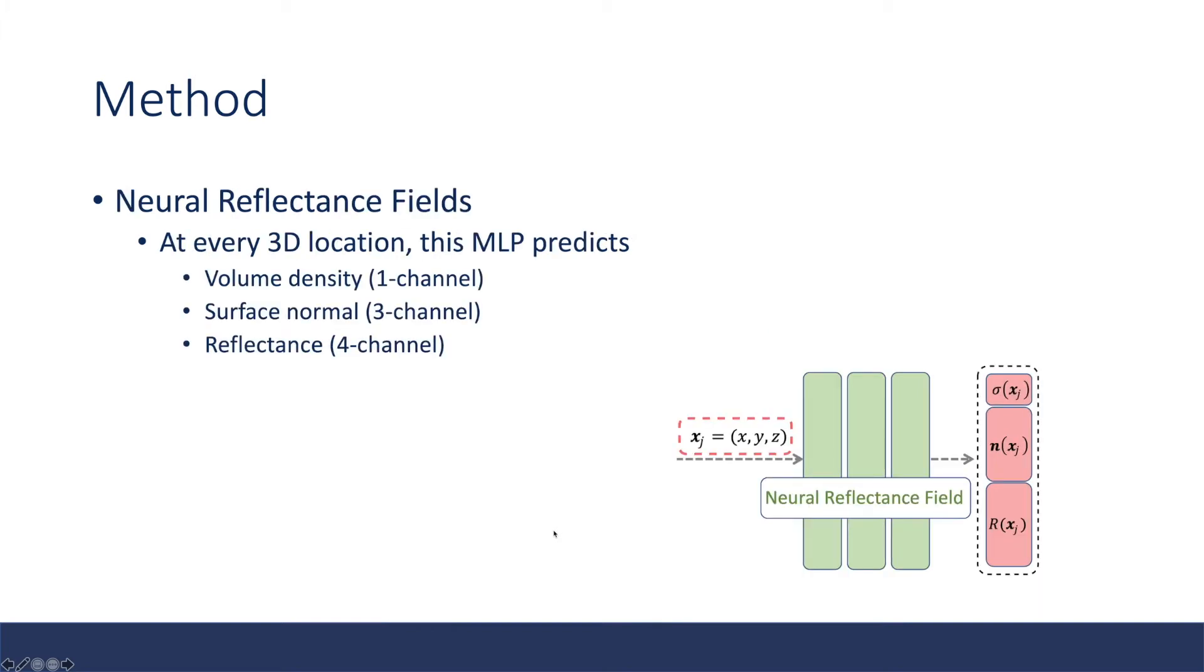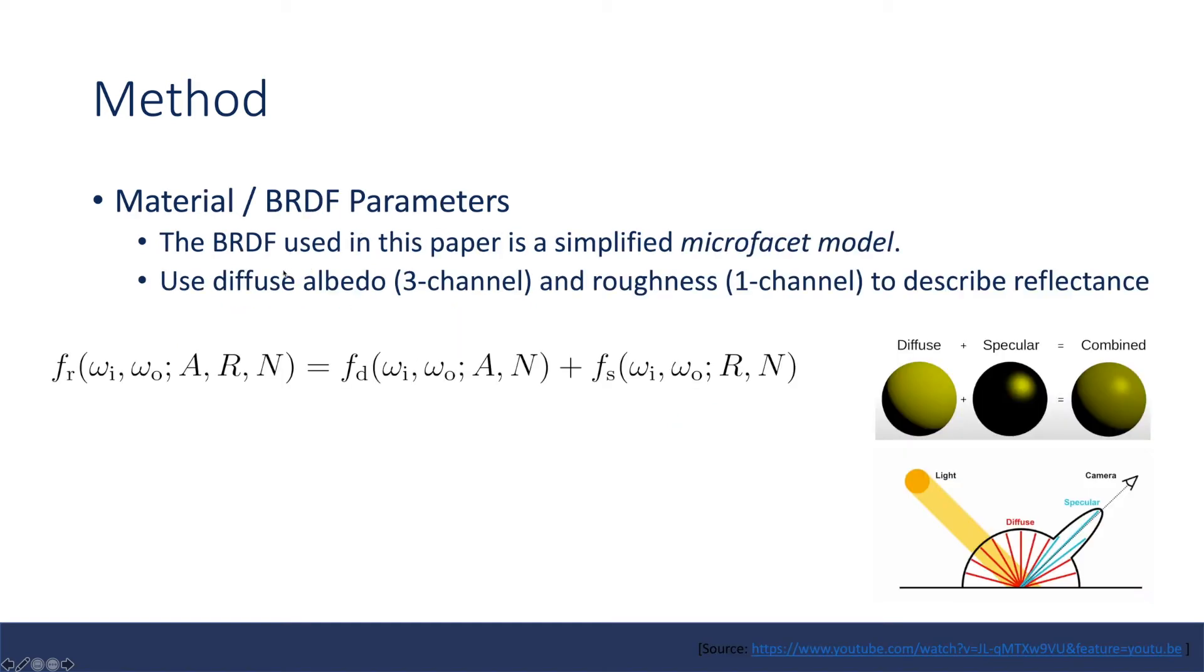Let's start with the neural reflectance field. It is still a continuous volumetric function that takes the location as input, the XYZ position in the world coordinate. At every 3D location, this MLP is predicting volume density (one channel property), surface normal (three channel property), and material properties or reflectance (four channel property).